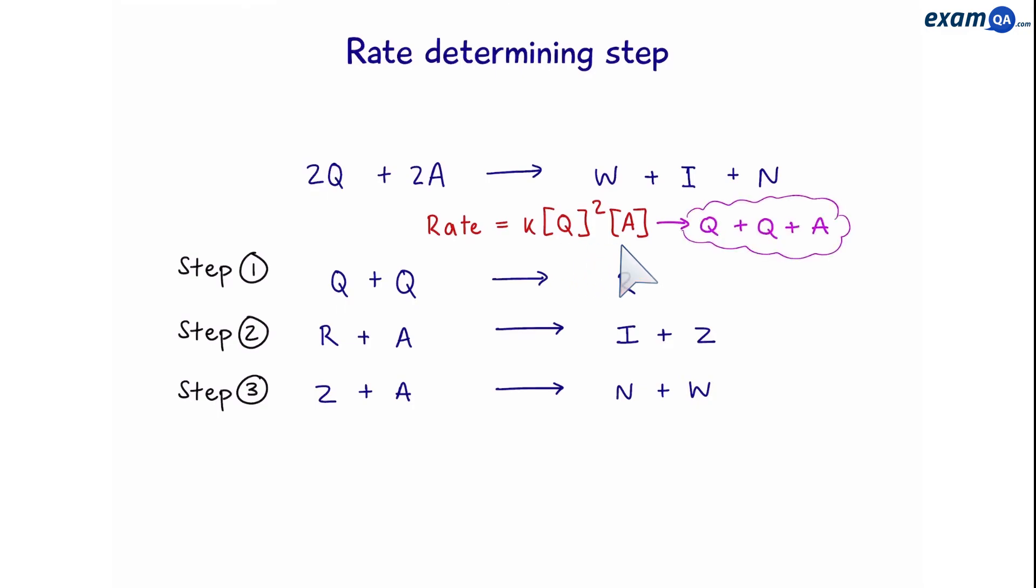So, we're looking for a step that has two Qs and an A. So far, step 1 has got two Qs. Step 2 has R plus A. And step 3 has Z plus A. It looks like none of them have two Qs and an A. However, if we look closely, we can see that R is the same as two Qs. Which means step 2 is basically Q, Q, A. So that means step 2 is the rate determining step.